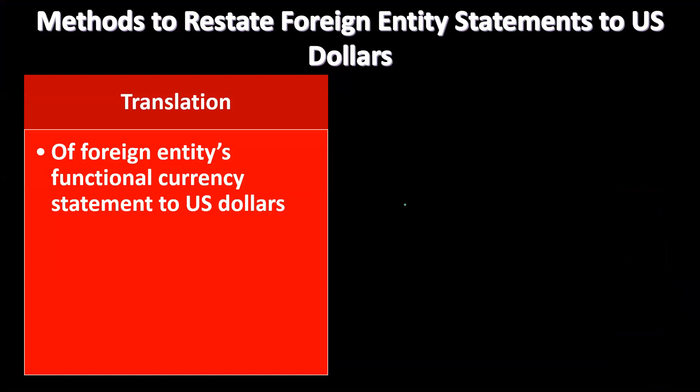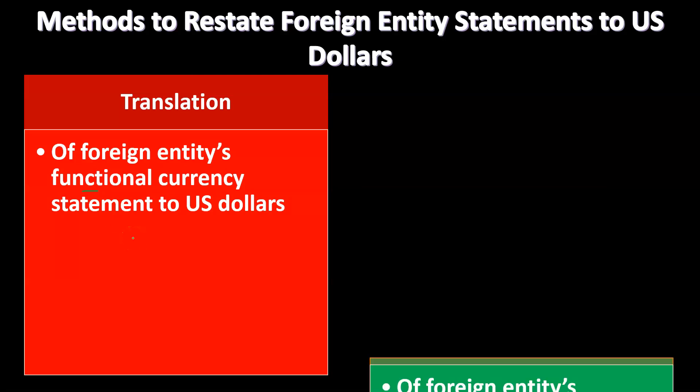Methods to restate foreign entity statements to U.S. dollars. The most straightforward method is translation of foreign entities' functional currency statements to U.S. dollars. Translation is used when the entity's statements are already in the functional currency — we simply translate from the functional currency to U.S. dollars.